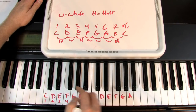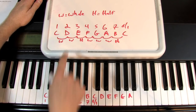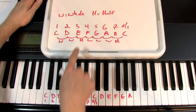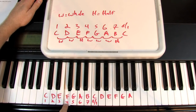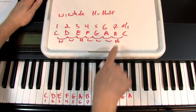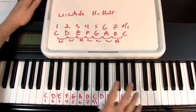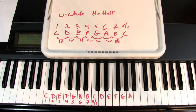As we apply this: C to D is a whole step, D to E is a whole step, E to F is a half step, F to G is a whole step, G to A is a whole step, A to B is a whole step, and B to C is that last half step. If you ever forget the formula, just look at the key of C and you can figure it out.